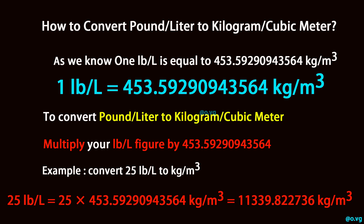1 pound per liter equals 453.59290943564 kilogram per cubic meter. To convert pound per liter to kilogram per cubic meter, multiply your pound per liter figure by 453.59290943564.